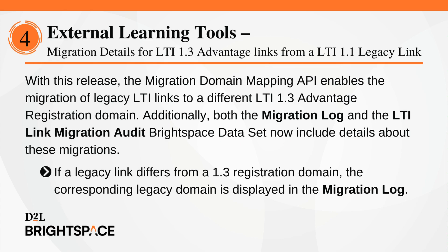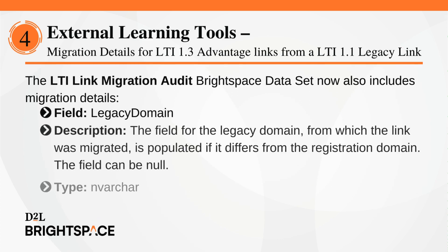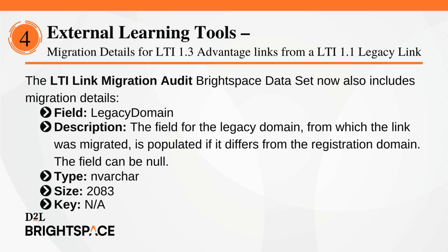With this release, the Migration Domain Mapping API enables the migration of legacy LTI links to a different LTI 1.3 Advantage registration domain. Additionally, both the Migration Log and the LTI Link Migration Audit Brightspace dataset now include details about these migrations. If a legacy link differs from a 1.3 registration domain, the corresponding legacy domain is displayed in the Migration Log. The LTI Link Migration Audit Brightspace dataset now also includes migration details, including a Legacy Domain Description field that is populated if it differs from the registration domain.